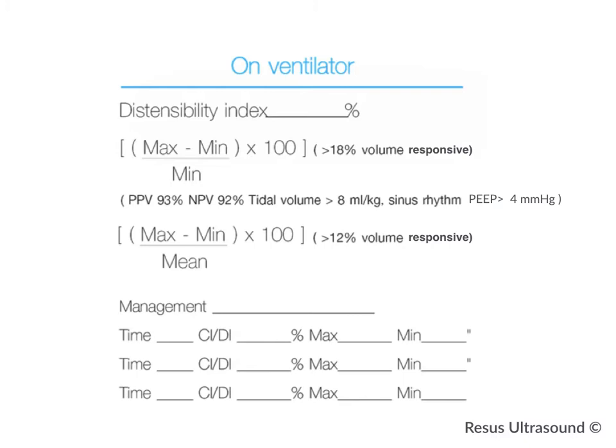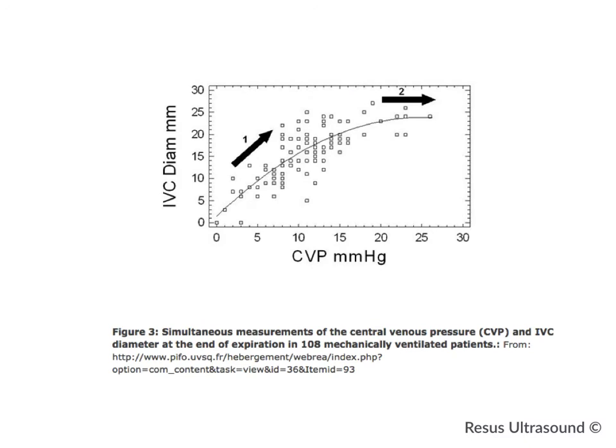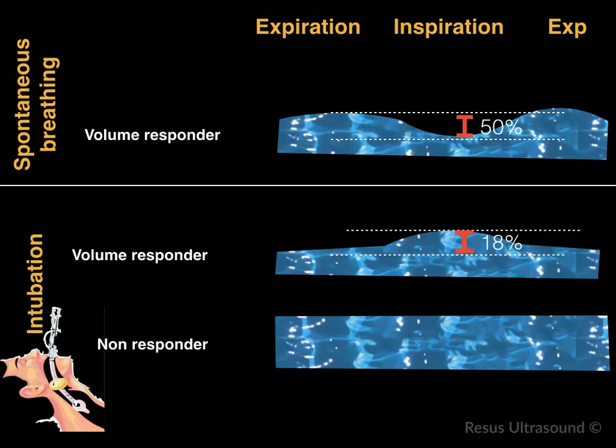The distensibility index threshold of 18% is easy to remember. Note that tidal volume must be more than 8 mL/kg, the patient must be in sinus rhythm, and PEEP should be at 4 cmH₂O. Regarding IVC diameter in mechanically ventilated patients, IVC diameter correlates with CVP when CVP is low, but once CVP goes up, the correlation disappears.